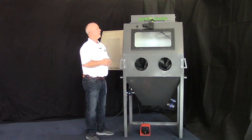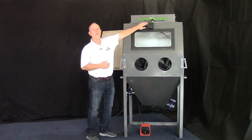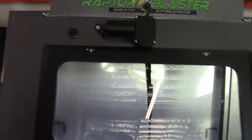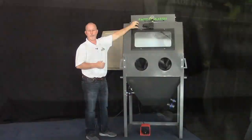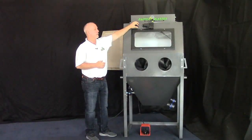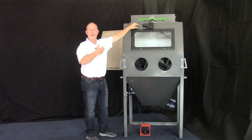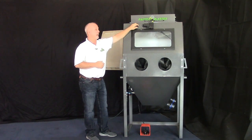For visibility in the cabinet, what we've done is we put a wiper motor and a wiper on the inside of the window, and in addition you have a water control knob that can get water to the window to run a little bit of water down the window as you're wiping it, and that clears out the cabinet for visibility.